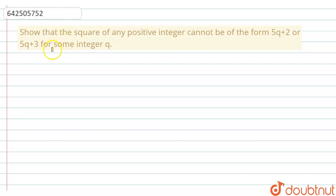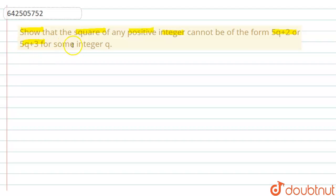Let's start the question. The question says: show that the square of any positive integer cannot be of the form 5q plus 2 or 5q plus 3, for some integer q.